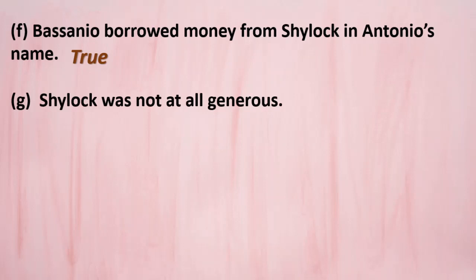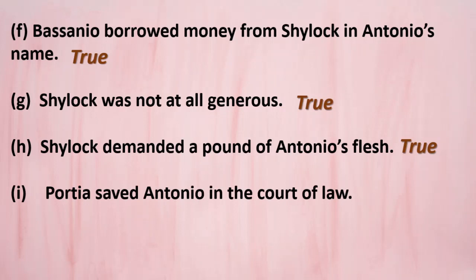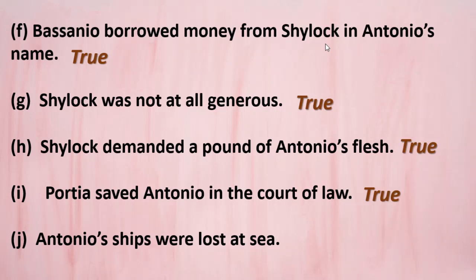Seventh statement: 'Shylock was not at all generous.' He was cruel and not kind — so this is true. Eighth statement: 'Shylock demanded a pound of Antonio's flesh.' Yes, this is true. Ninth statement: 'Portia saved Antonio in the court of law.' Correct — the young lawyer was none other than Portia. Tenth statement: 'Antonio's ships were lost at sea.' This is false — Antonio's ships were safe.